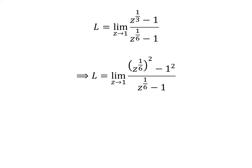In the numerator, we can rewrite as square of sixth root of z minus square of 1. The numerator can be expressed as sixth root of z minus 1 times sixth root of z plus 1.